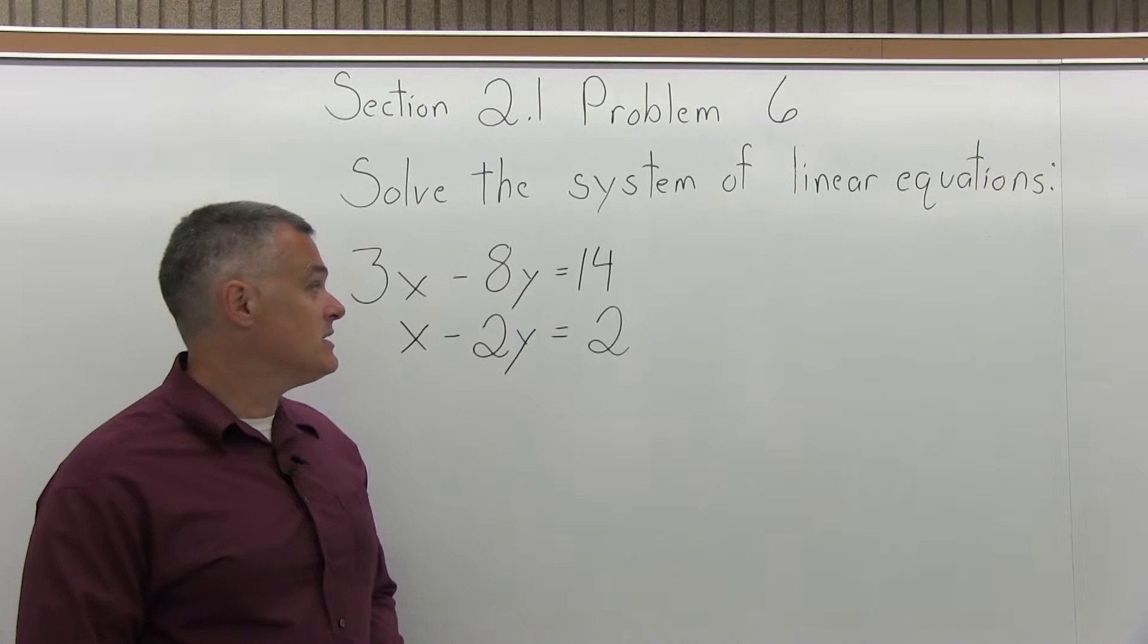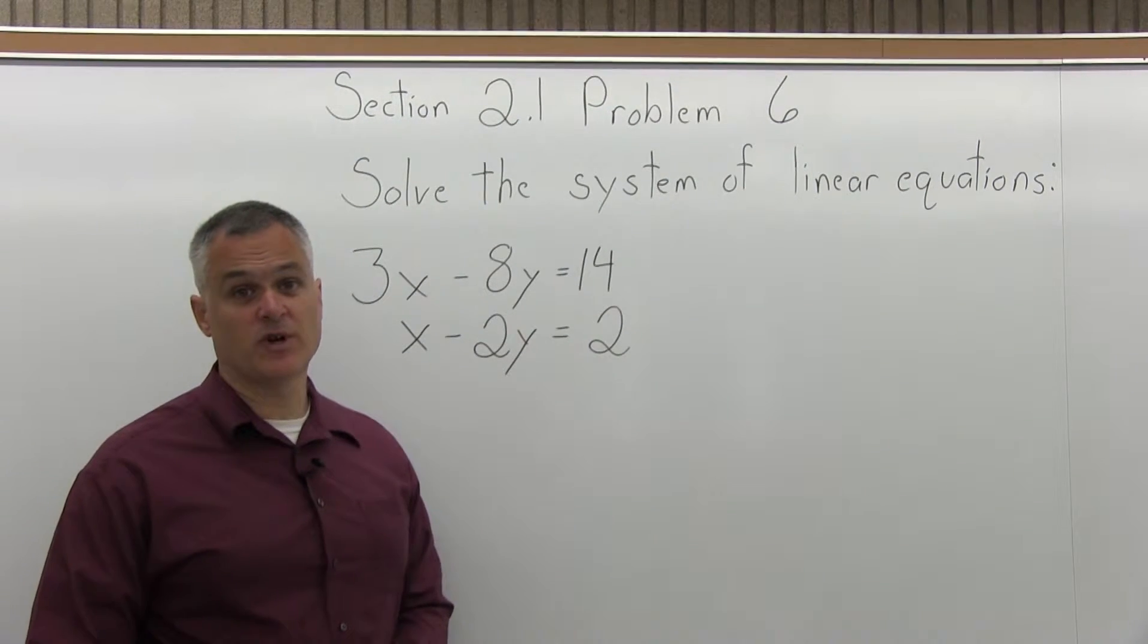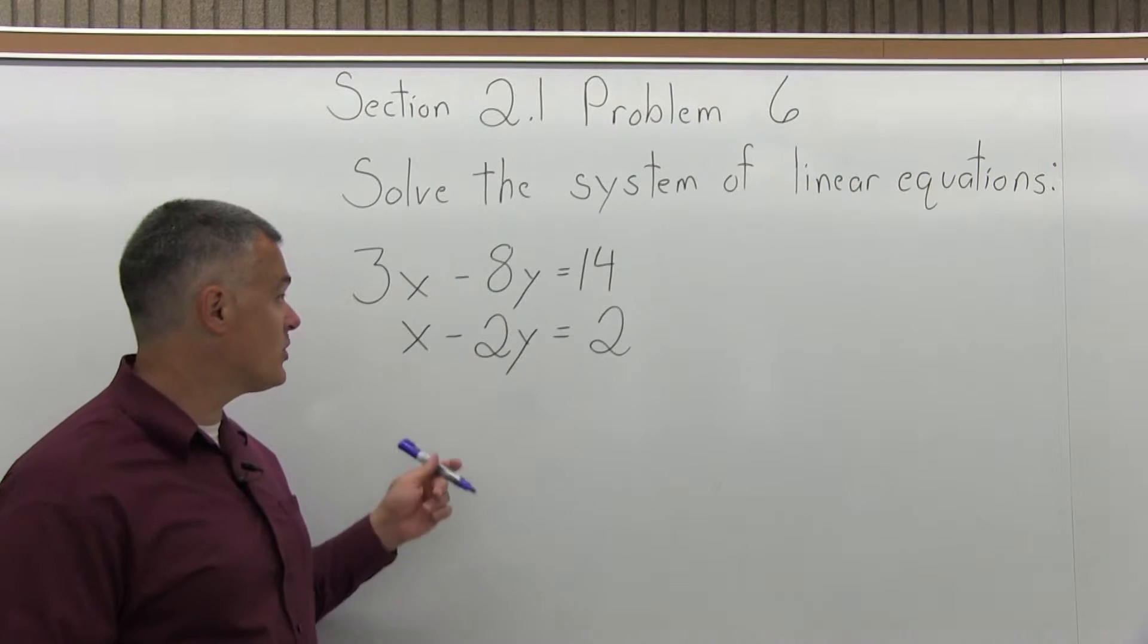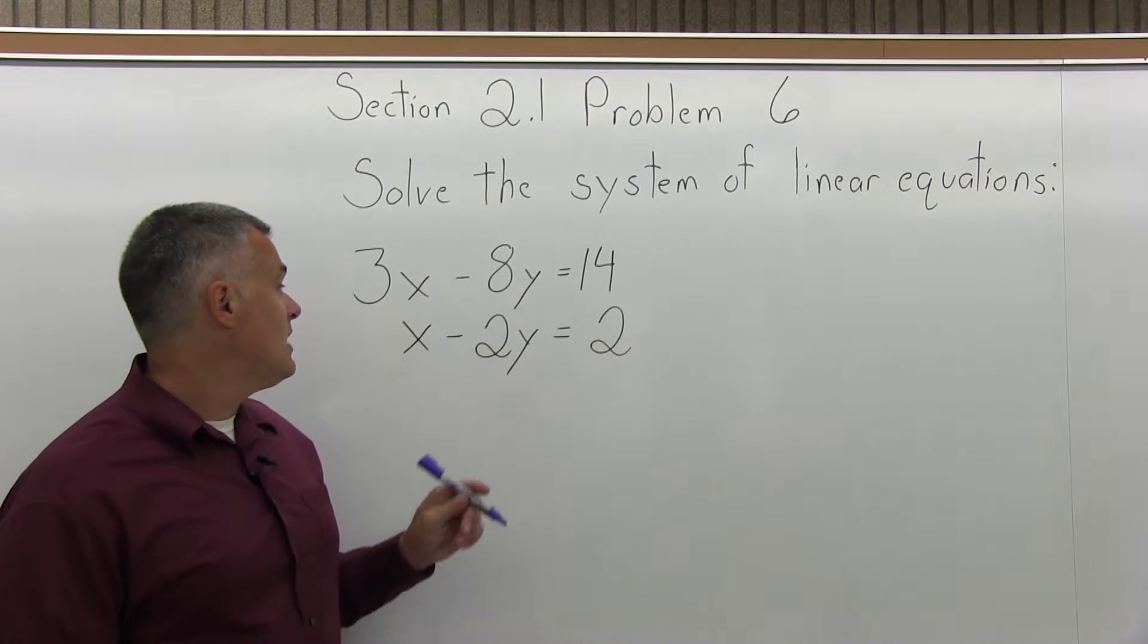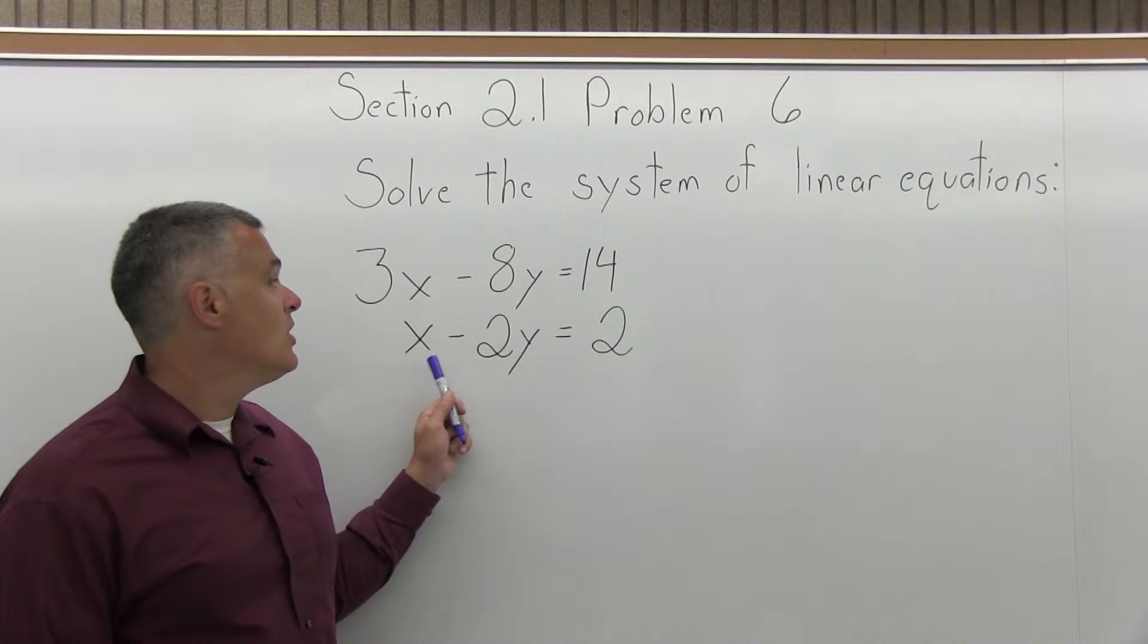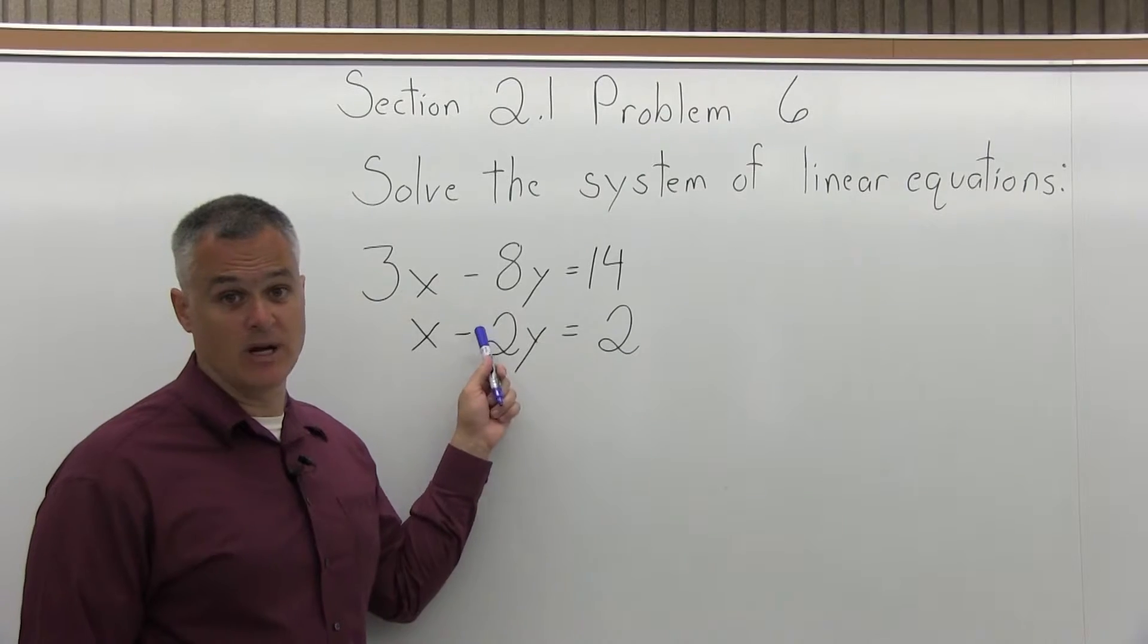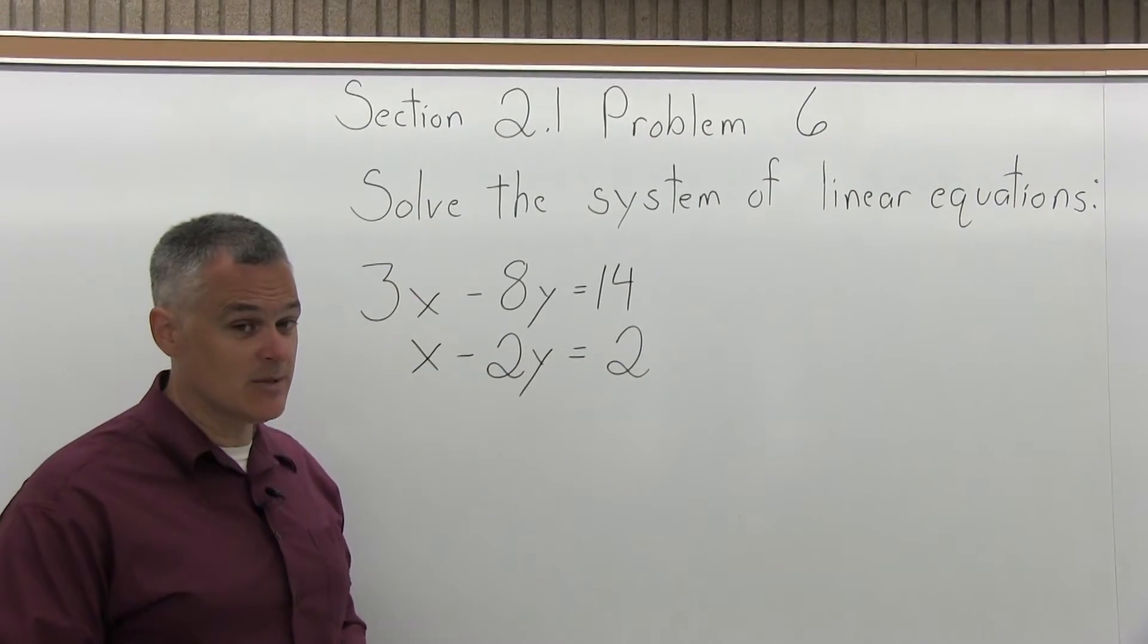Step one is multiply one or both equations times some values so that one of the variables will have the same number in front but with opposite signs. Our options are 3x and negative 3x. That would work. Or, we could go with negative 8y and positive 8y. That would work too. We should get the same answer either way. I'll choose to cancel the x.